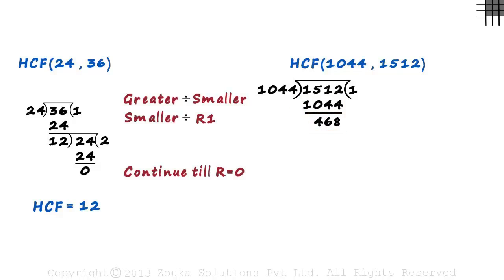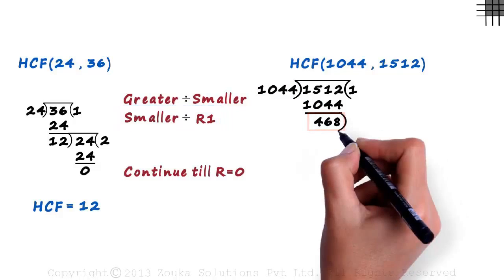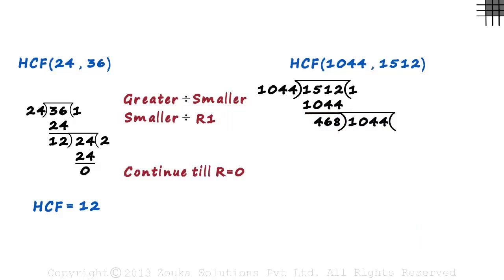Since it's not zero, we continue with our division. The smaller number becomes the next dividend, and the first remainder becomes the divisor. So we write 1044 here. And then we write 468 times 2 equals 936, and this minus this equals 108. Now we completed the second stage, and the remainder is not zero. So how do we continue further?